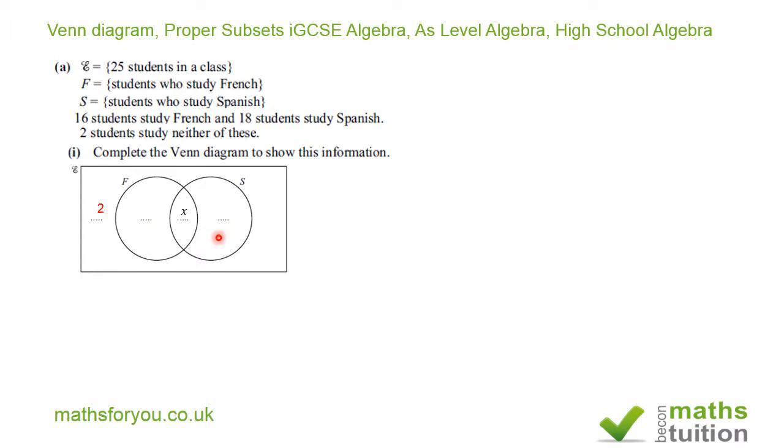Now over here, we want to find the number of students who study just Spanish only. So we do 18 minus X. Now together, all of these, if you add up to 25. So we've got 2 plus 16 minus X plus X plus 18 minus X equals 25.